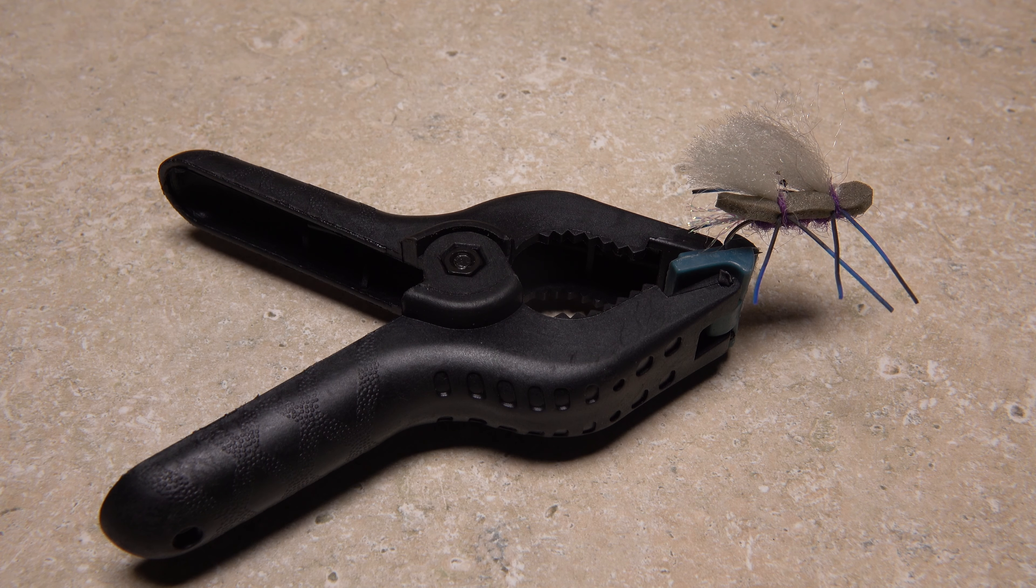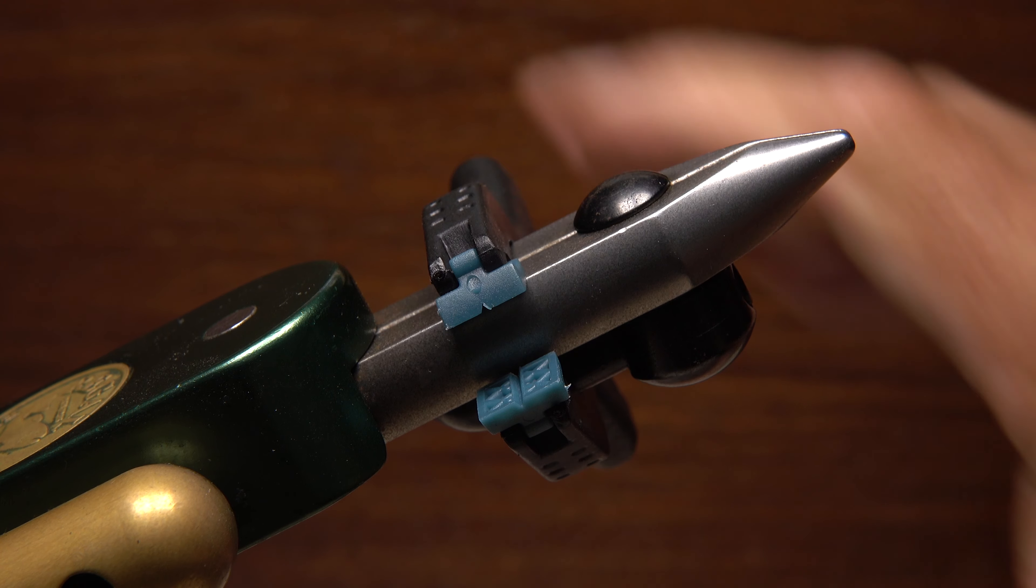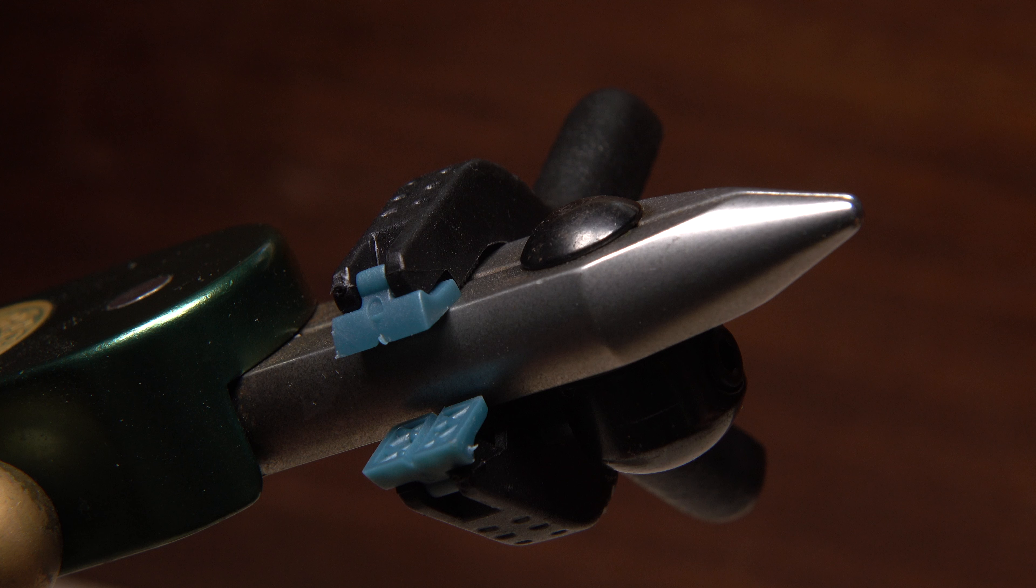You can use the clamps to hold flies while head cement is drying. There's generally a size that's perfect for a materials holder on your tying vise.